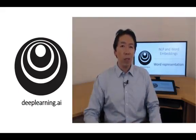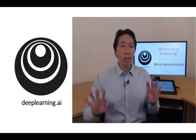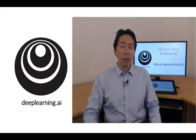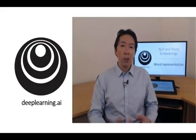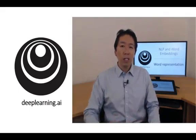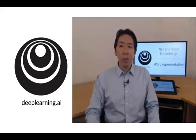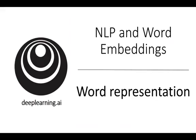One of the key ideas you'll learn about is word embeddings, which is a way of representing words that lets your algorithms automatically understand analogies like that man is to woman as king is to queen, and many other examples. Through these ideas of word embeddings, you'll be able to build NLP applications even with modest or relatively small label training sets. Finally, towards the end of the week, you'll see how to de-bias word embeddings, that is to reduce undesirable gender or ethnicity or other types of bias that learning algorithms can sometimes pick up. So let's get started with a discussion on word representation.